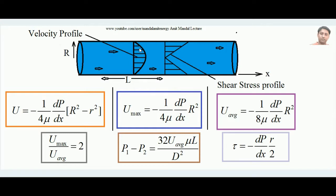The average velocity is: u_avg = −(1/8μ)(dp/dx)(R²). Comparing with u_max: the denominator changes from 4 to 8, which is a factor of 2. Therefore, u_max / u_avg = 2. This is an important result — for Poiseuille flow through a round pipe, the ratio of maximum to average velocity is 2.